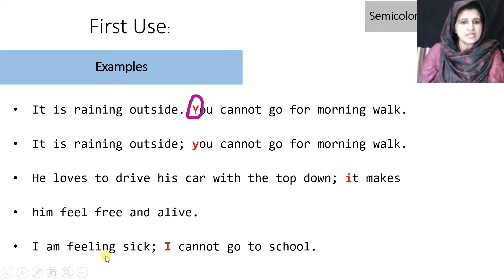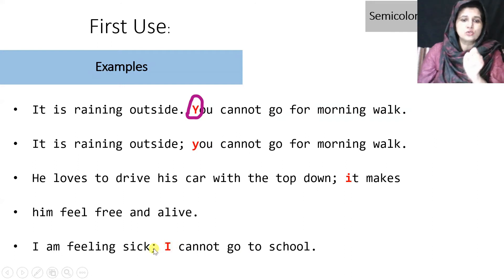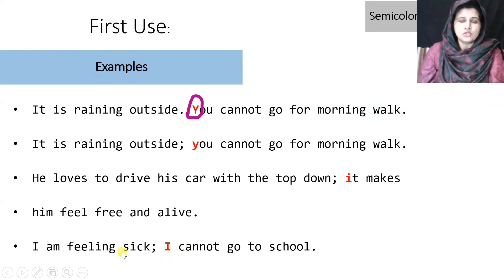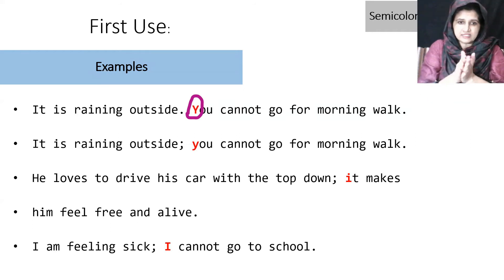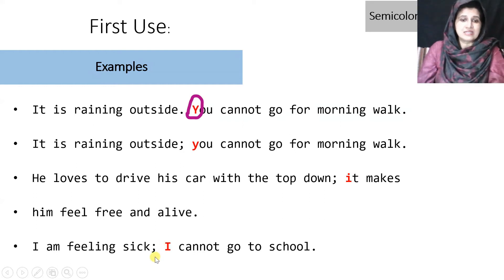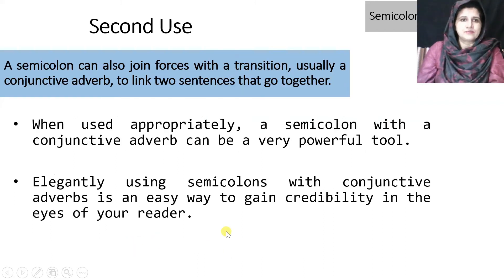'I am feeling sick; I cannot go to school.' This is another example of two sentences connected through a semicolon. Note that 'I' is capital because whenever 'I' is written individually, it is always capitalized. After adding the semicolon, the ideas are better connected and their effect upon each other is stronger. This is how we can make our argument more convincing using a semicolon.